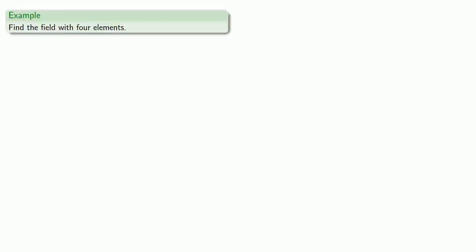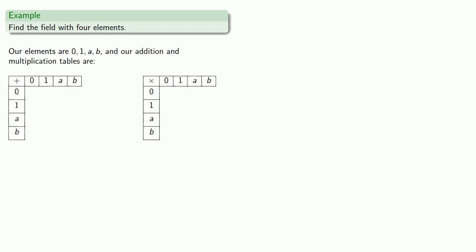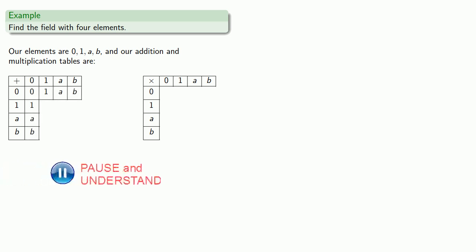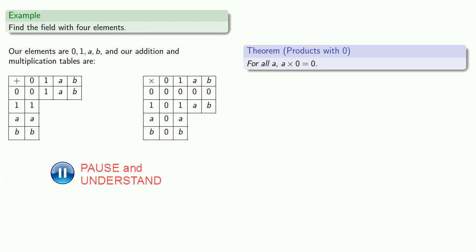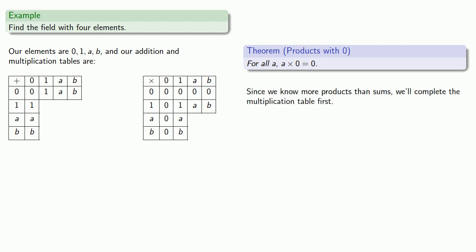Let's find the field with 4 elements. Our elements have to be the additive identity 0, the multiplicative identity 1, and 2 other elements, which we'll call a and b. We'll set up our addition and multiplication tables. Since 0 is the additive identity, 0 plus anything or anything plus 0 is unchanged, giving us the first row and first column of the addition table. Also, a times the additive identity gives the additive identity, giving us the first row and first column of the multiplication table. Since 1 is the multiplicative identity, multiplying by 1 doesn't change anything, giving us the second row and second column of the multiplication table.